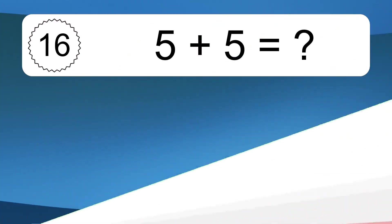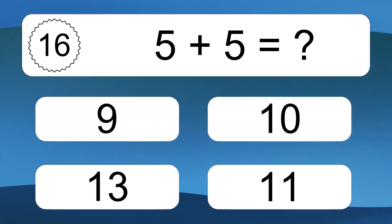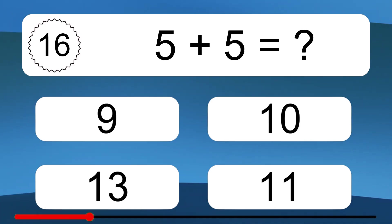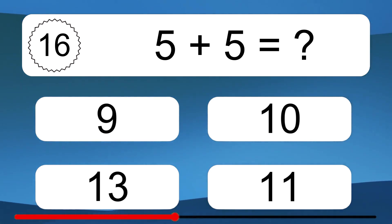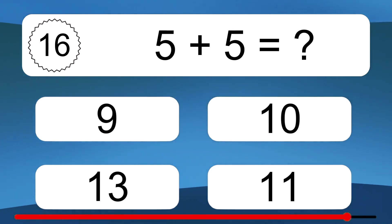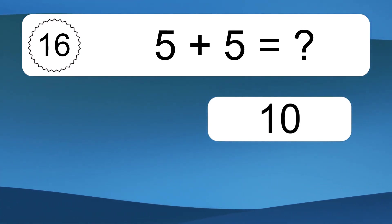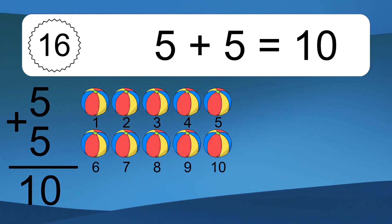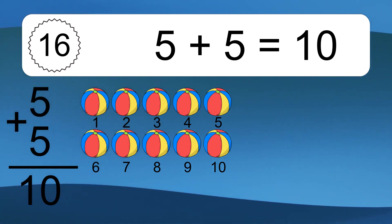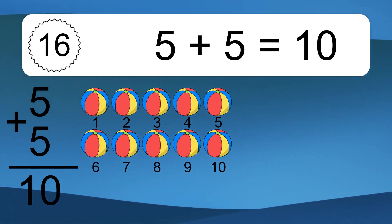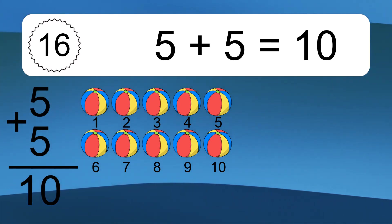5 plus 5 equals what? 5 plus 5 equals 10. Let's count it. 1, 2, 3, 4, 5, 6, 7, 8, 9, 10.